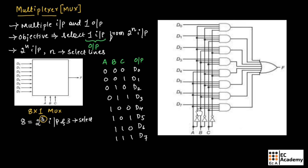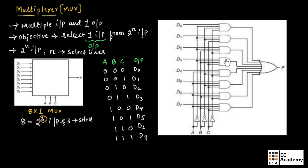This is the logic circuit of the 8×1 multiplexer. It has 8 inputs and 3 select lines. Based on the value of the select lines, we get the output. We have designed the 8×1 multiplexer using AND gates, OR gates, and NOT gates.